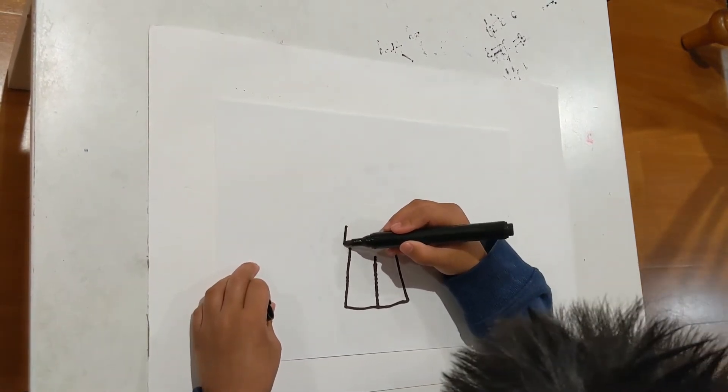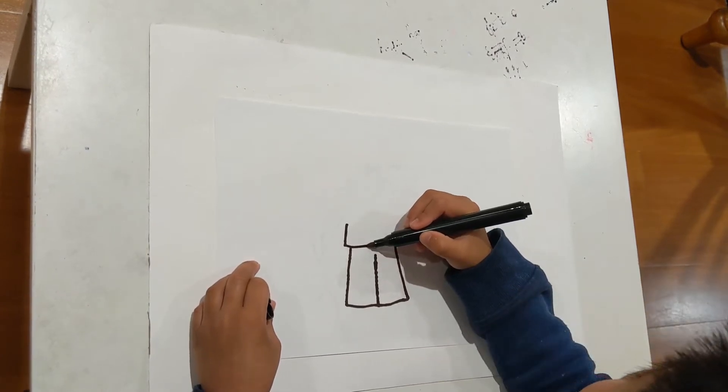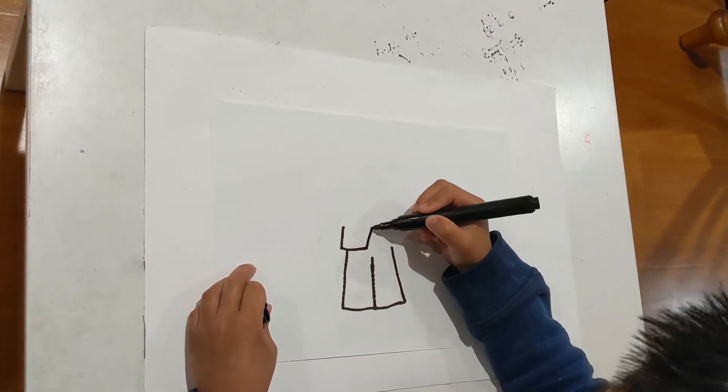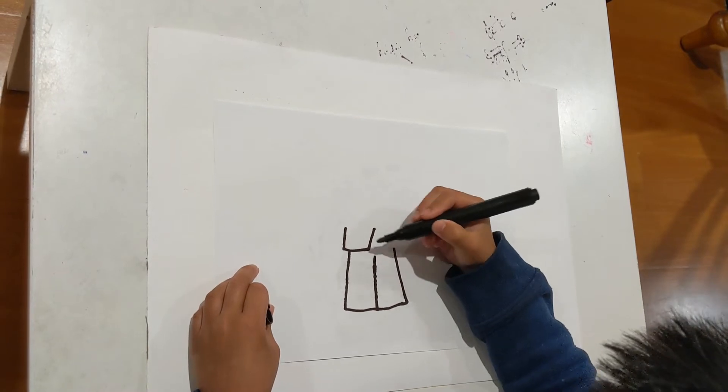Then I'll just do a diagonal square. It doesn't connect to here. Just moving it up.